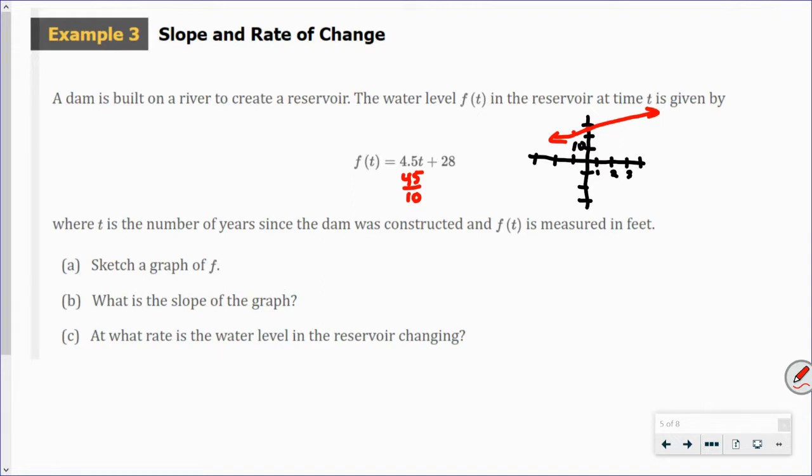What is the slope of the graph? We just did that. That's 45 over 10. We don't want to really put like decimals in fraction form. But you could say that the slope is 4.5 as well. At what rate is the water level in the reservoir changing? Well, that rate is your slope. That is the slope. So, it is 4.5 feet per year. Okay. That the slope is your rate of change.